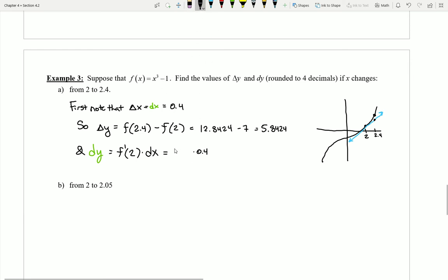So I have 3x squared. Now I have my x as a value of 2, so this is the value of 12 times 0.4, and that leaves me with a value of 4.8. Much like I see here in the picture, how much the tangent line has increased is not as much as how much the actual function has increased.